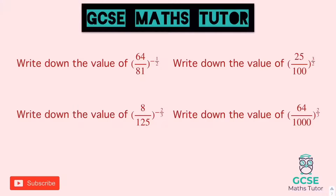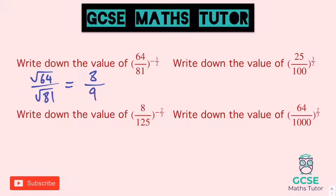The first one: we're going to have to flip that over and the 2 on the bottom does the root. The square root of 64 is 8 and the square root of 81 is 9. Then we do the negative power — flipping it over gives us 9 over 8. We could also convert it to a mixed number: 8 goes into 9 once with a remainder of 1, so 1 and 1 eighth.